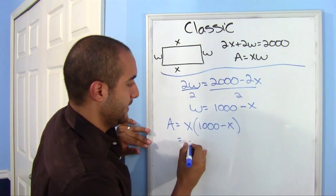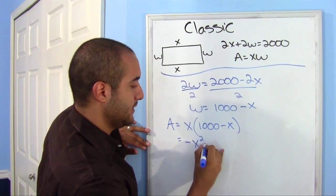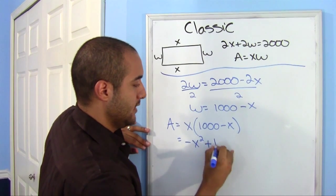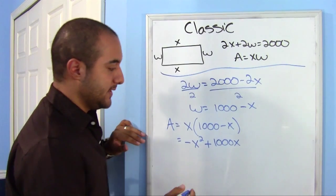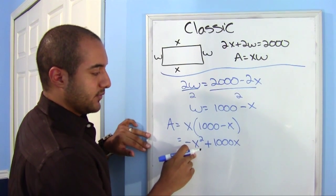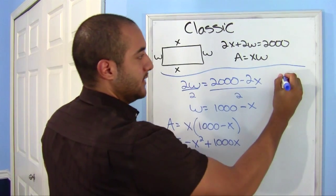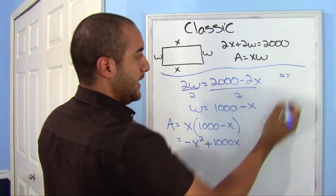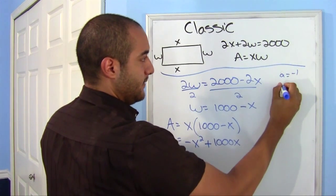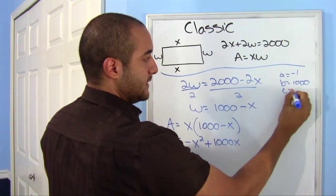If I distribute this, I get, and I'm going to put this first, minus x squared plus 1,000x. And notice I did that, so I can get my x squared first, so I know that this is my a, this is my b, and there's no c. So right now, a is negative 1, b is 1,000, and c is 0.